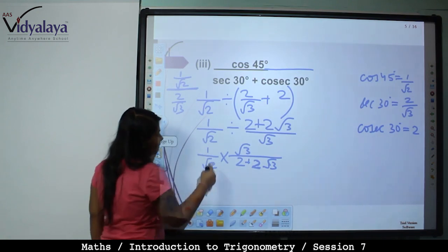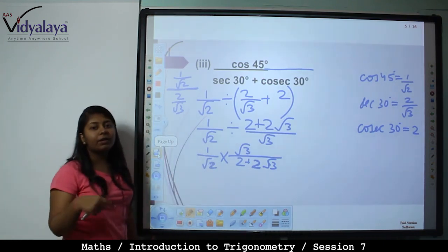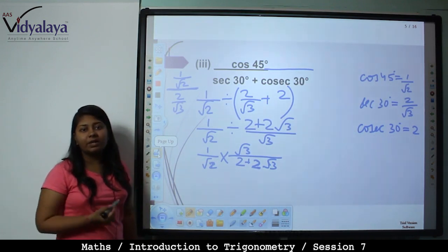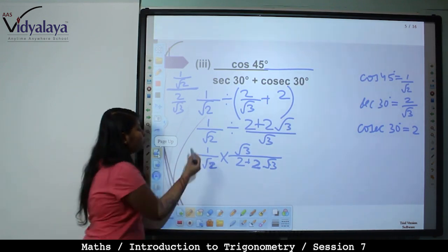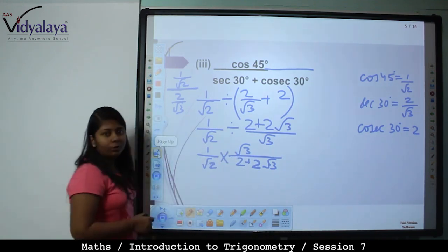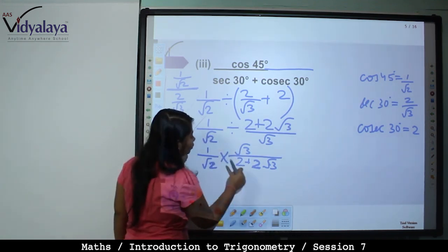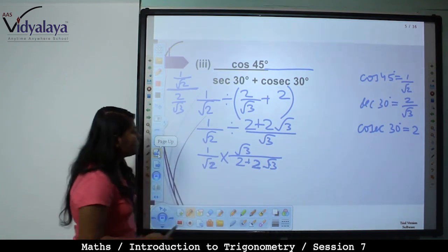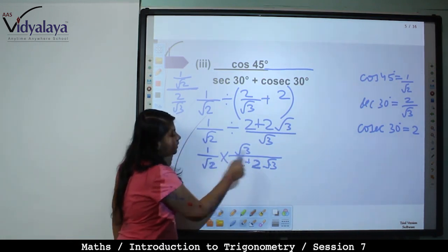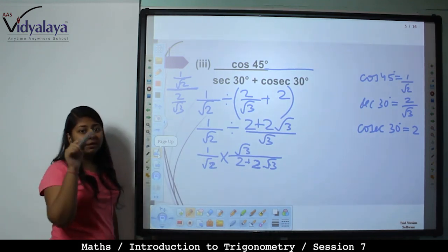Now in the denominator we don't keep root, so rationalize. Root 3 by root 2 multiplied by root 2 upon root 2. In 2 plus 2 root 3, take 2 as common, so what remains is 1 upon 2 bracket 1 plus root 3. Then rationalize this by multiplying by 1 minus root 3.